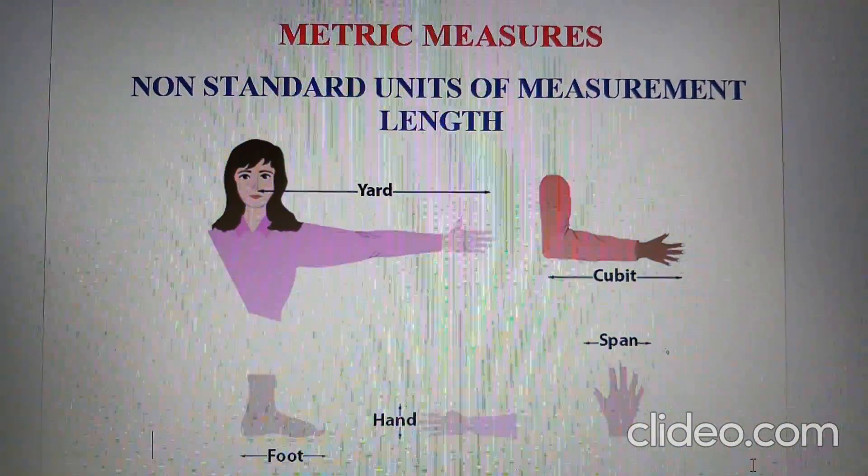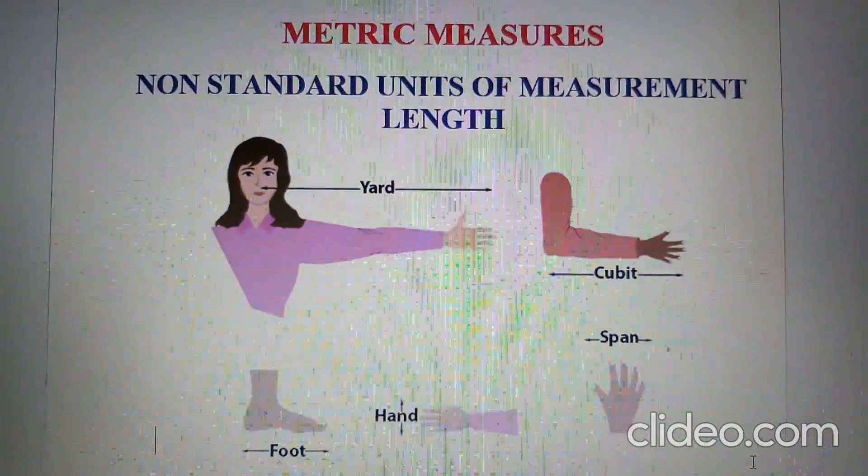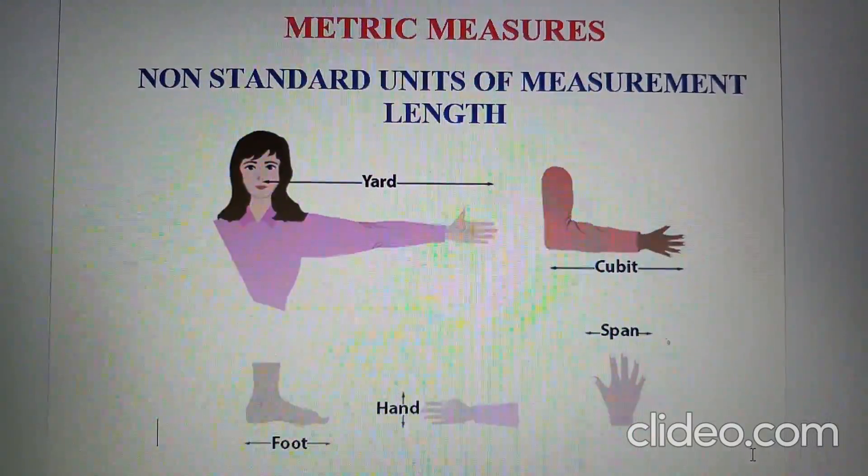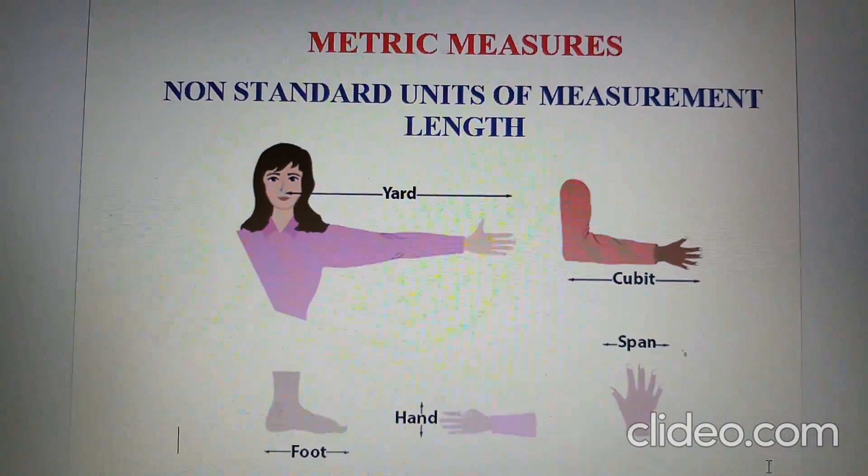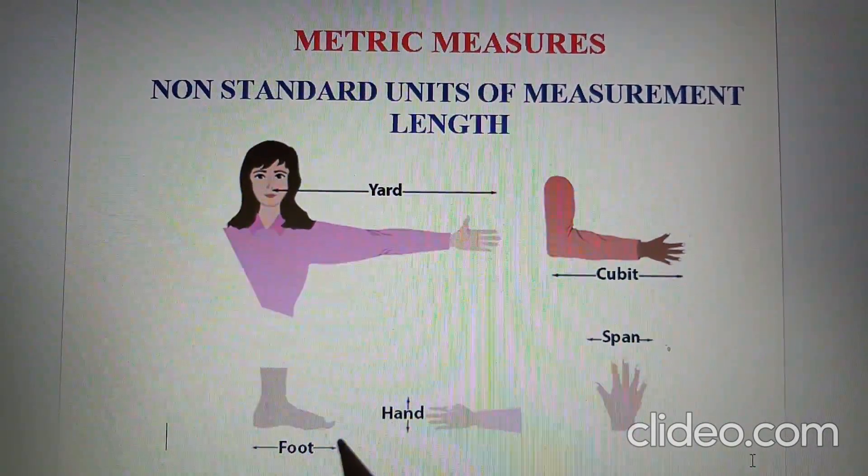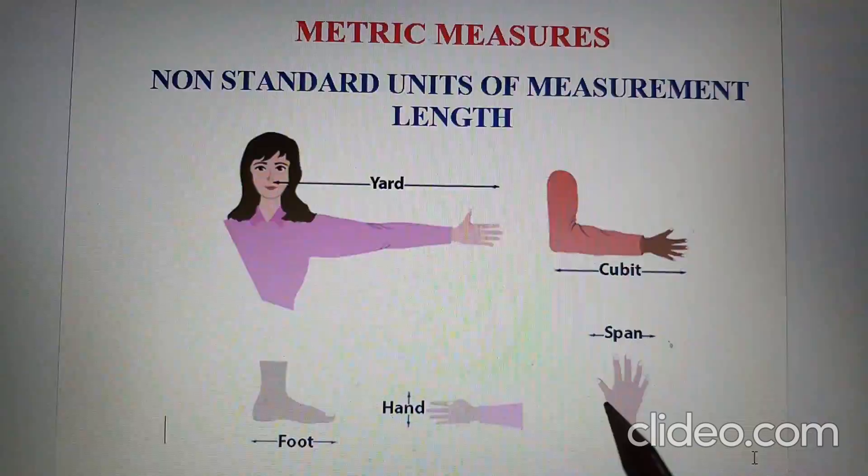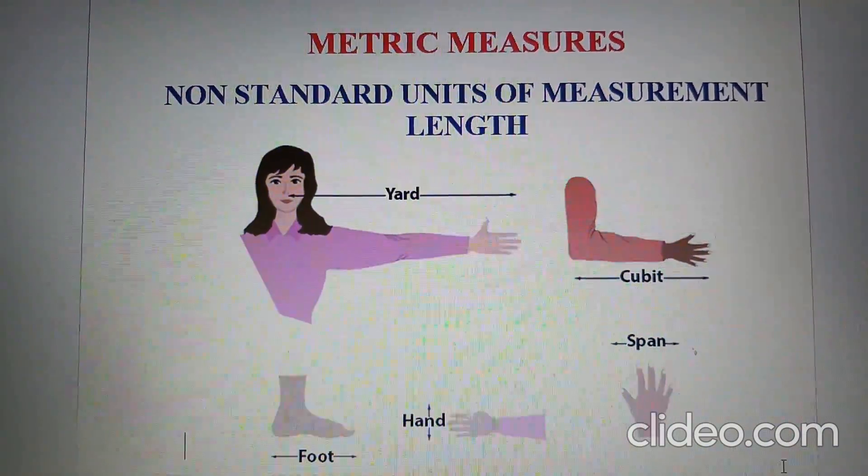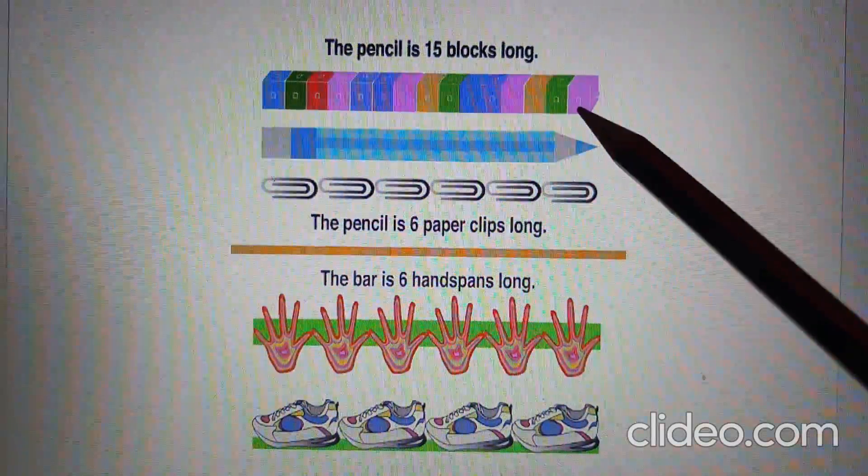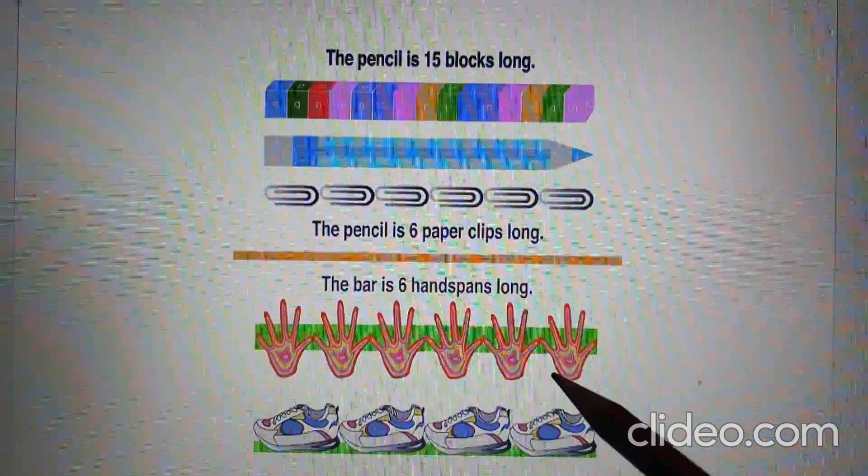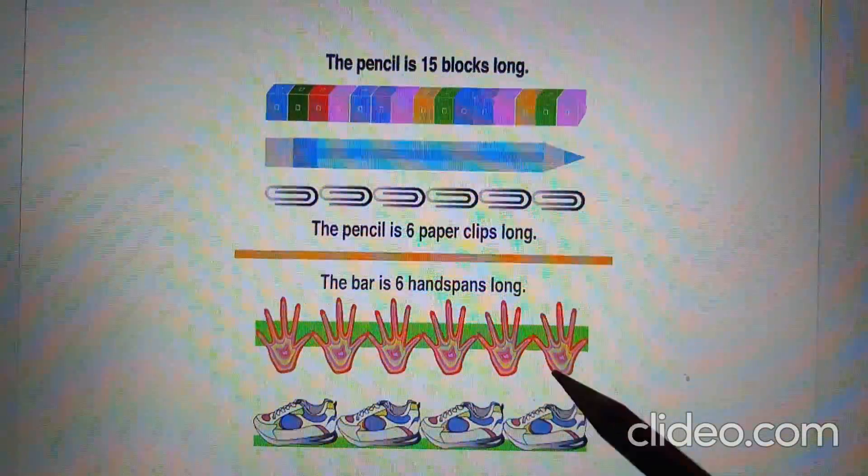Hello children, our today's topic is metric measure. In ancient times, people used their body parts like arms, hands, or feet to measure things—to measure how long things are and how far apart they are. Objects like blocks, clips, and other items can also be used to measure things.